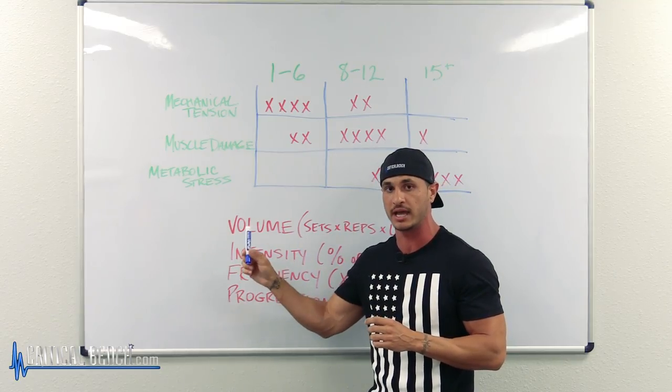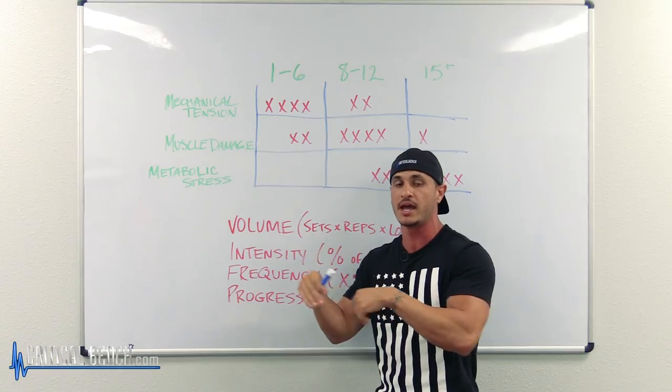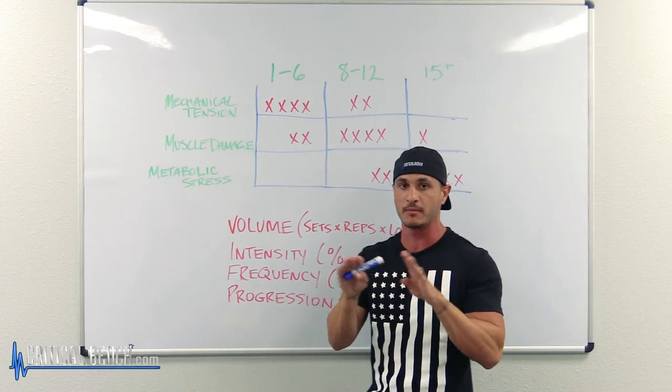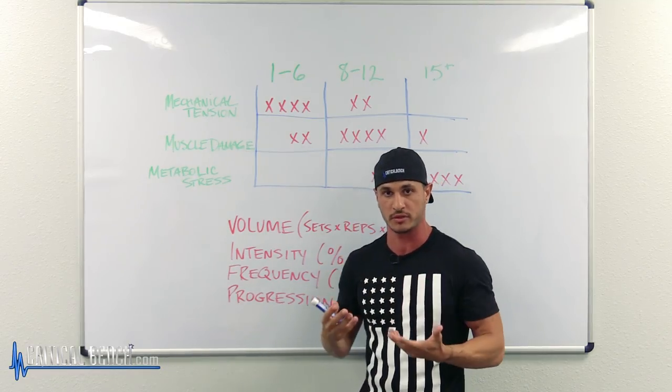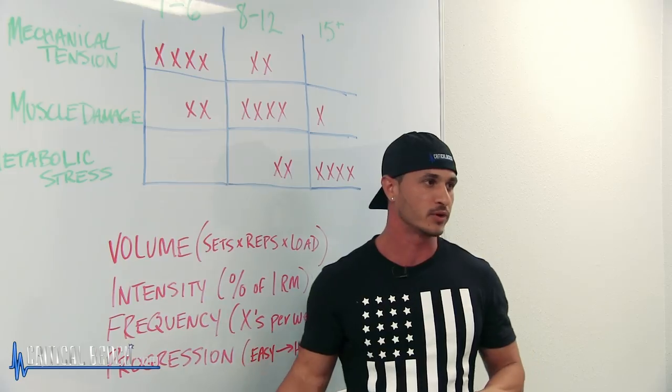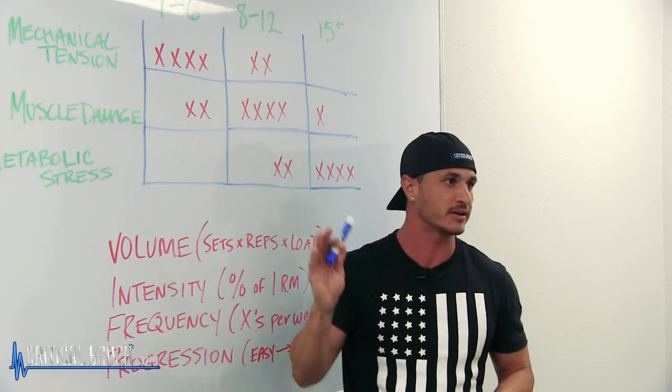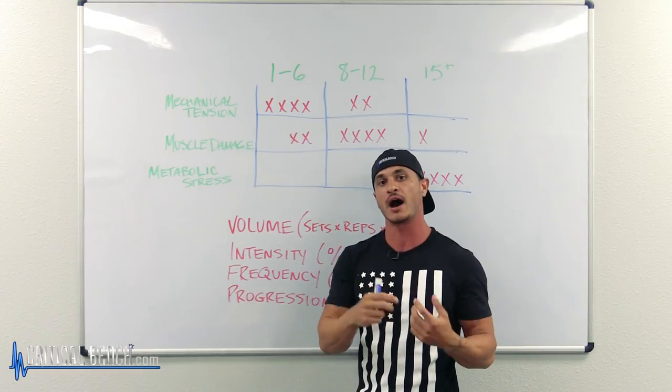So if the first person is doing 12 sets of chest on Monday and the second person is doing 6 sets on Monday and then another 6 sets Wednesday or Thursday, they're doing the same amount of work, but the person who trained twice is getting more growth.